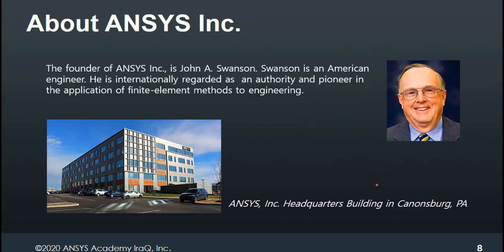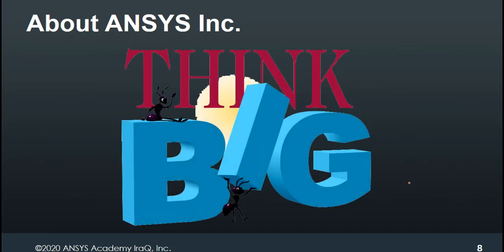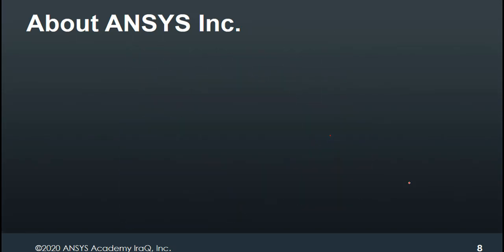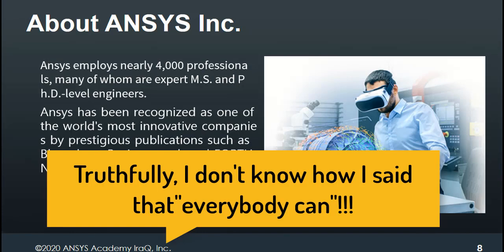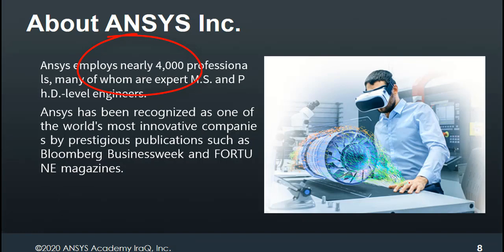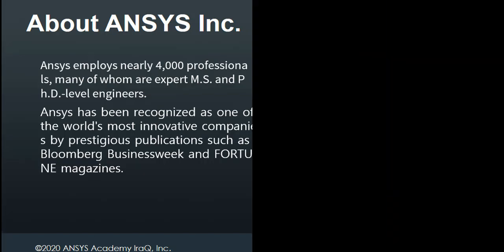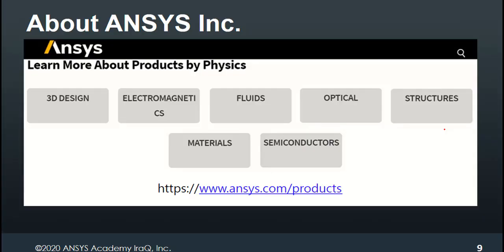ANSYS was founded by John Swanson in 1970 under the name Swanson Analysis Systems, and since that time it has been widely used. Today, more than 2000 universities work with this program. You might think about producing a program like ANSYS yourself — and anyone could try — but you should know that ANSYS employs 4000 professional engineers and is recognized as one of the world's most innovative companies. ANSYS has many analysis systems and products including 3D design, Electromagnetics, CFD, and others. Within each product there are numerous programs, and no one can claim to be an expert in all of them — but everyone can become an expert in a specific field.